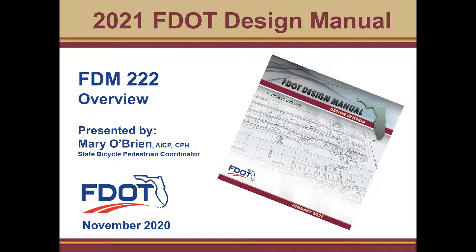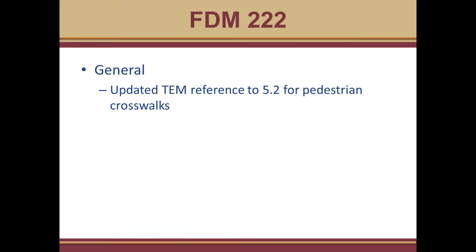We're going to start by going over FDM 222, which is the pedestrian chapter. One general change that has happened is that we've updated the TEM reference to 5.2 for anything on pedestrian crosswalks — technically called '5.2 Treatment for Pedestrian Crosswalks at Mid-Block and Unsignalized Intersections.'